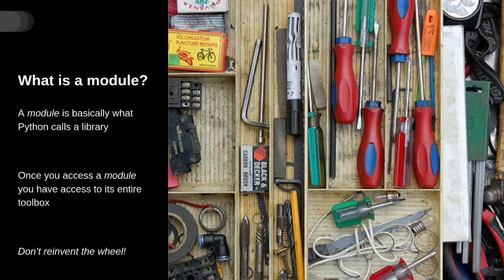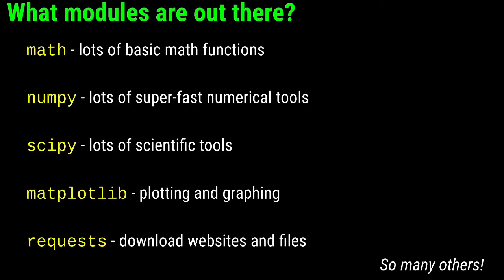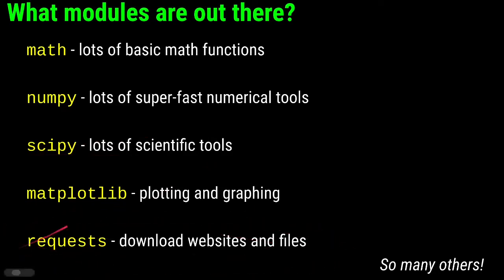Once you have access to a module, you have access to its entire toolbox — again, so you don't have to reinvent the wheel. Bringing in this code to your program, you have a couple of different ways to do it; some are easier than others, some can introduce problems. What modules are out there? There are literally hundreds and hundreds. The ones we tend to use in this class include the math module, numpy for fast numerical tools, scipy for other scientific tools, matplotlib for plotting and graphing, and the requests module for downloading websites and web scraping.